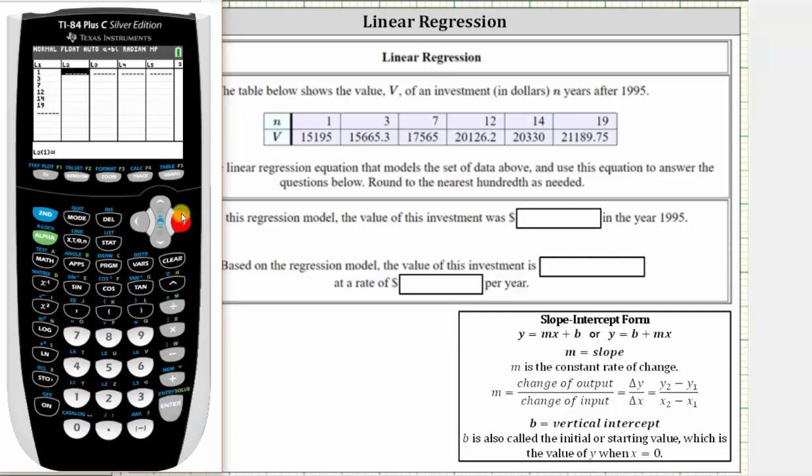Now I'll press the right arrow, and now I enter the values of V in L2. So the first value is 15,195, enter, and so on.